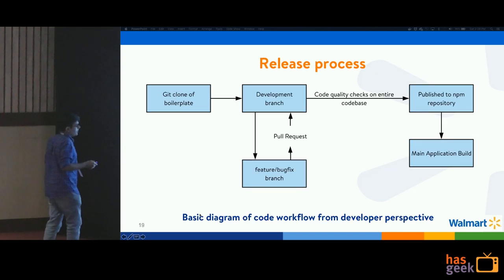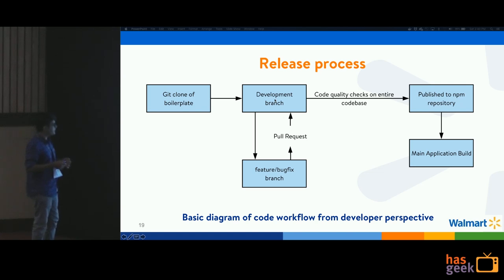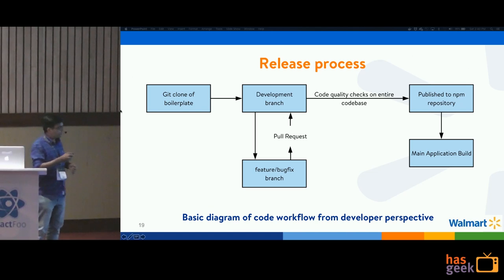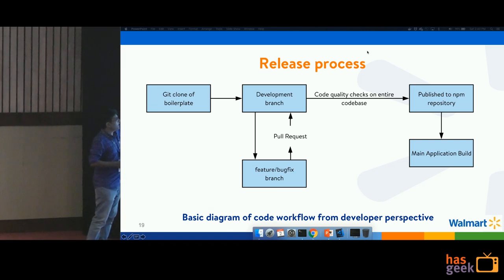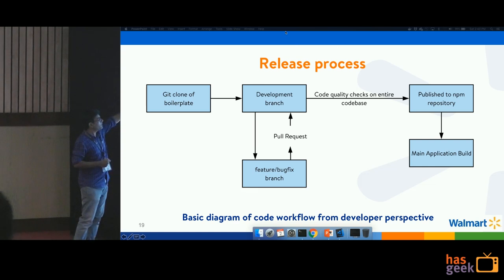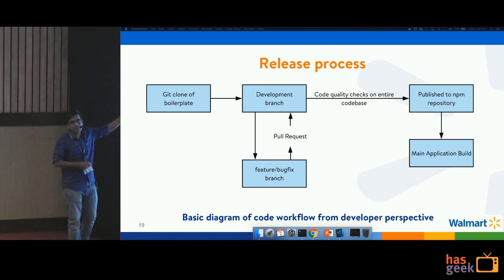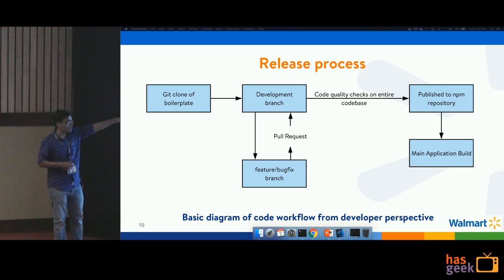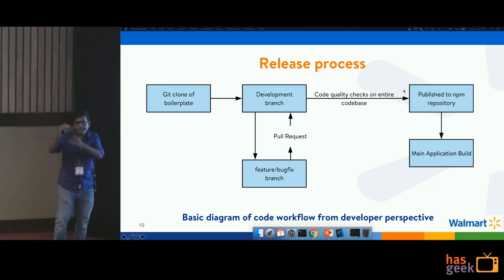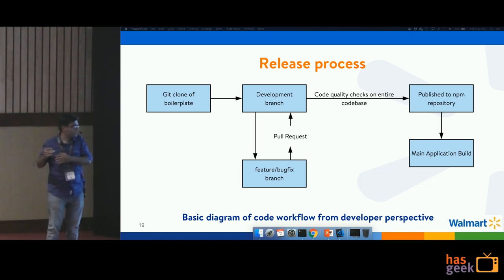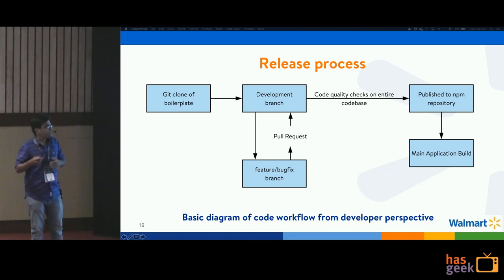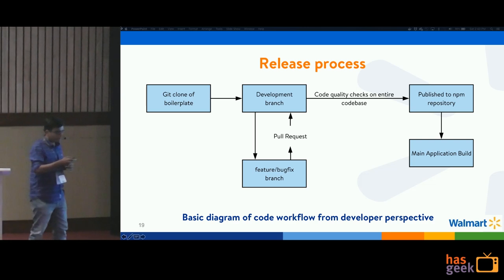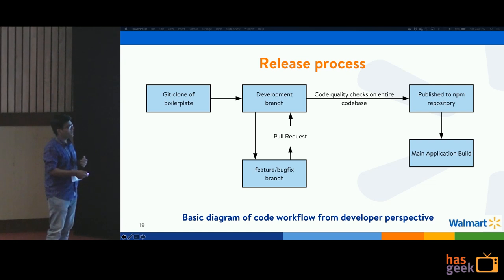From the developer perspective, the workflow looks like this: you clone the boilerplate repo — this is a one-time onboarding process. The development team has a development branch, takes a feature or bug fix short-lived branch, makes code changes, and sends a pull request back. Quality checks run on the delta code. Once automated checks pass, a reviewer checks the code, it goes through all servers, and gets published to the internal npm repository after running all code quality checks on the entire codebase. Publishing to npm then triggers the build of the main app.